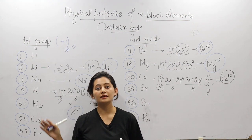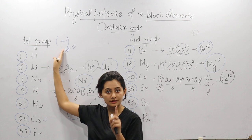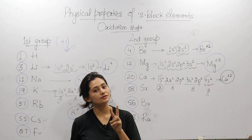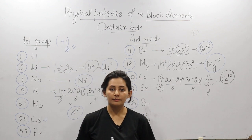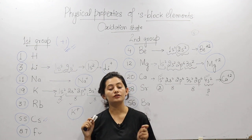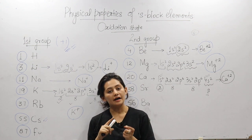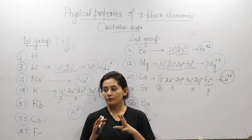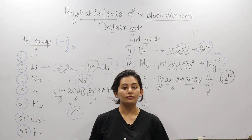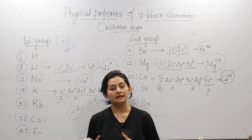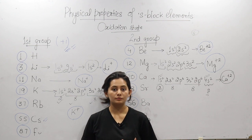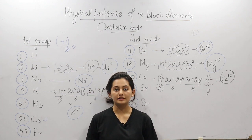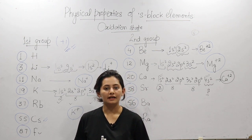So these were the oxidation states of S-Block elements. If we talk about the first group, each element will show a +1 oxidation state. And if we talk about the second group, each element will show a +2 oxidation state. Practice this — try the electronic configuration of all elements and connect all the things, and these concepts will be clear. If you have any doubts, please comment or contact us on Instagram or Facebook. That's all for now. We will come back with another video. Thank you.